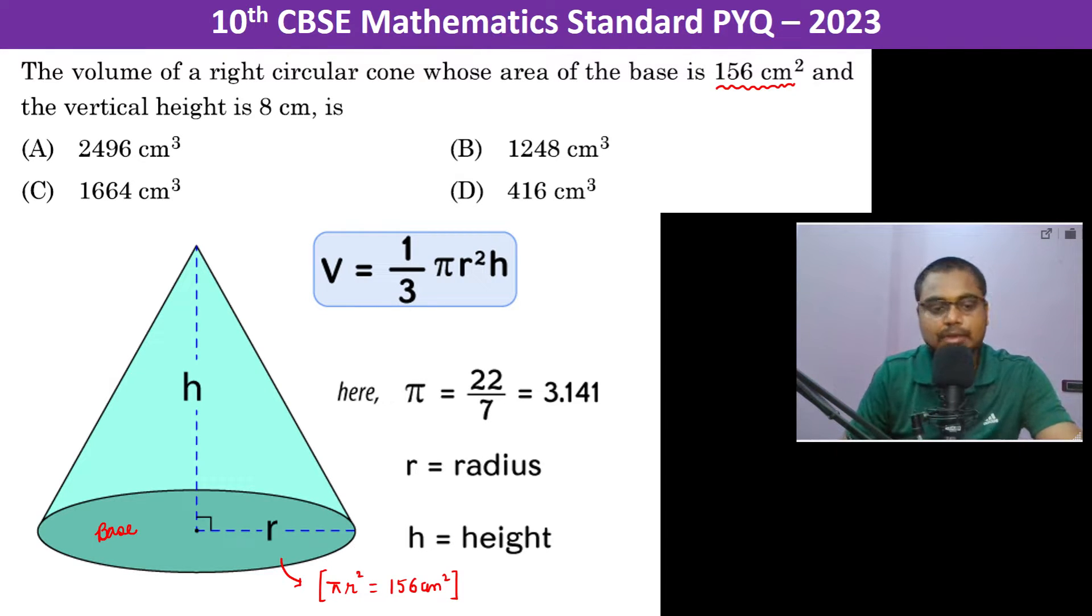The area of the base is a circle, so therefore the area of the base is pi r square, which is 156 centimeters square. And the vertical height, that is h, is given as 8 centimeter.